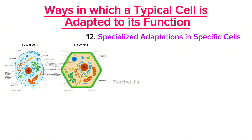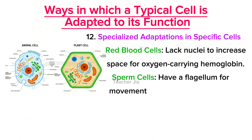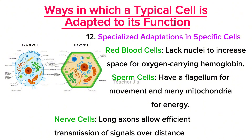We also have specialized adaptations in specific cells. Red blood cells lack nuclei to increase space for oxygen-carrying hemoglobin. Sperm cells have a flagellum for movement and many mitochondria for energy. Nerve cells have long axons that allow efficient transmission of signals over distances.